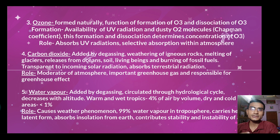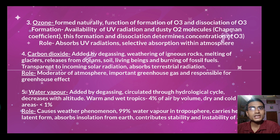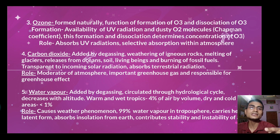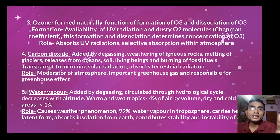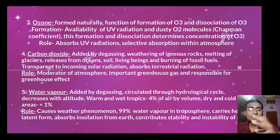Carbon dioxide also comes from degasification, weathering of igneous rocks, melting of glaciers, release from oceans, soil, living beings, and burning of fossil fuels — anything we burn produces carbon dioxide. Its role is that it acts as a moderator in the atmosphere and is also an important greenhouse gas — this is what causes the greenhouse effect. Carbon dioxide transparently passes incoming solar radiation but absorbs outgoing terrestrial radiation.